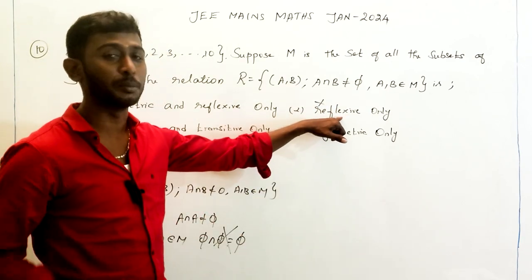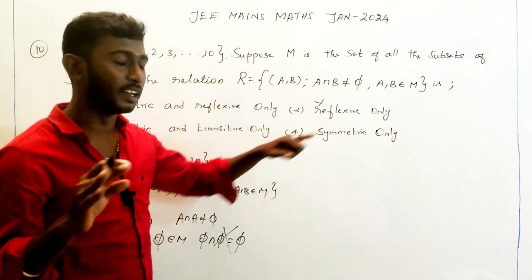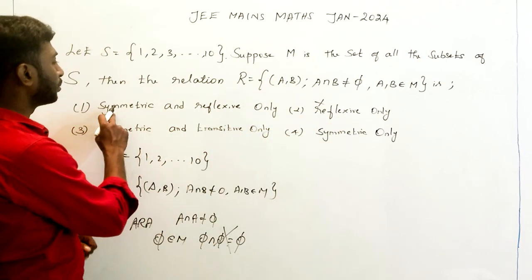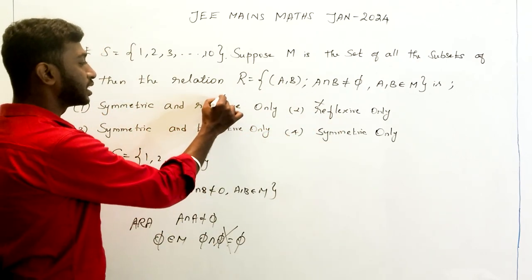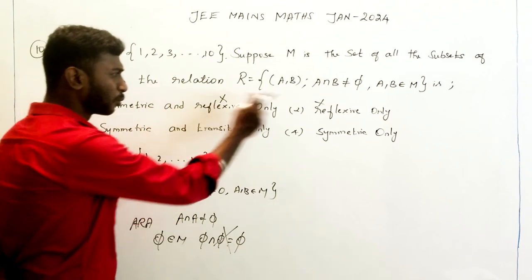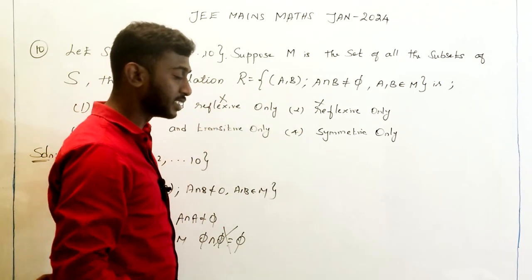Therefore, R is not reflexive. Since reflexive is not satisfied, any options requiring reflexivity are eliminated. Both reflexive-only and symmetric-and-reflexive options are deleted.